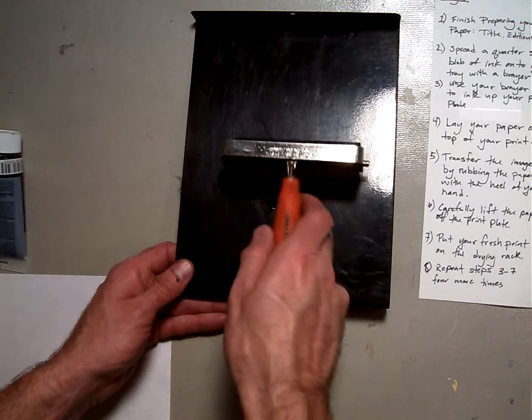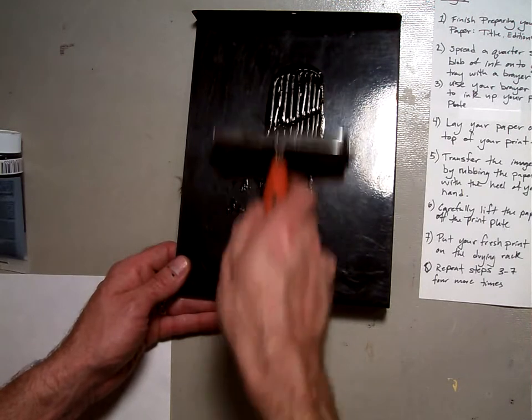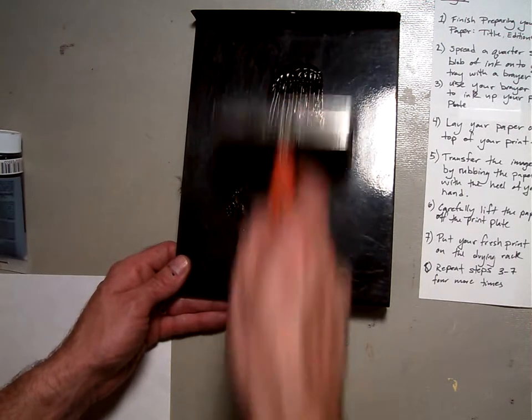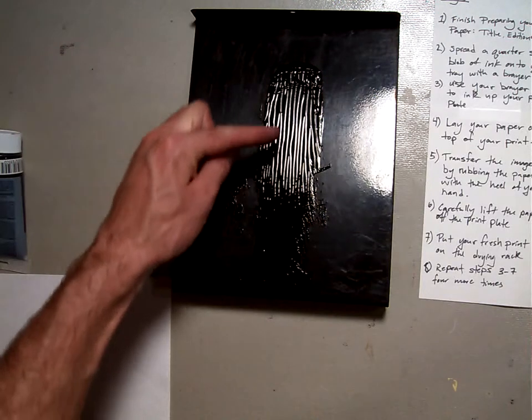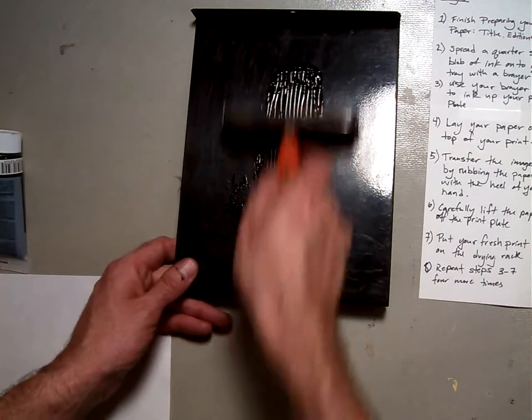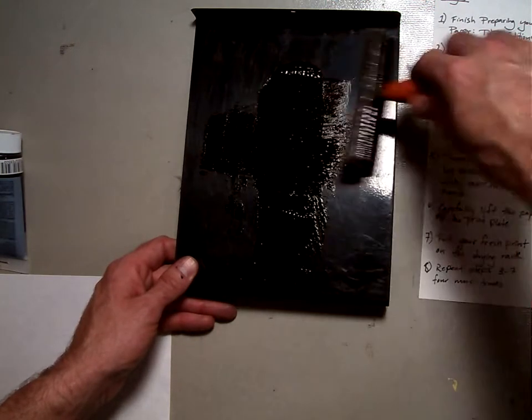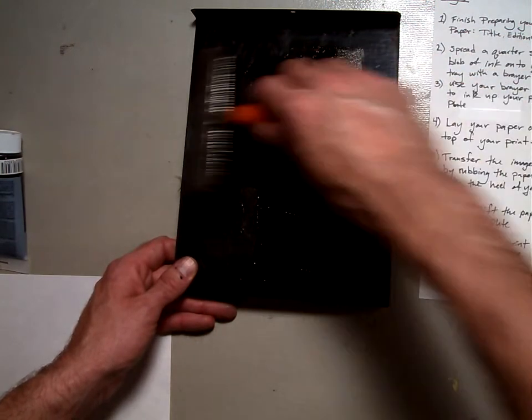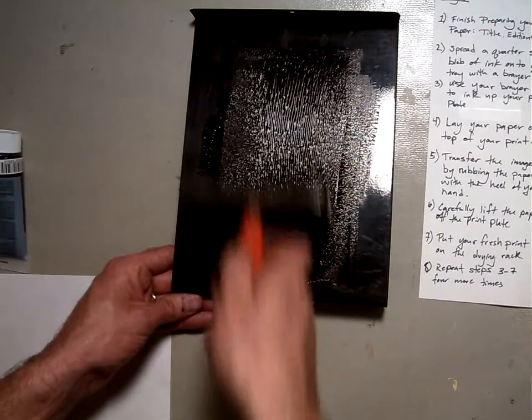And then you're going to take your brayer and start rolling the ink. You're going to roll it the same direction. And you want to start at one edge and kind of roll it the same direction. You can kind of see these lines in the ink here. That's good. That's what we want it to look like. And then you can start rolling it from the other direction, from right to left, so you kind of get the whole tray full of ink.